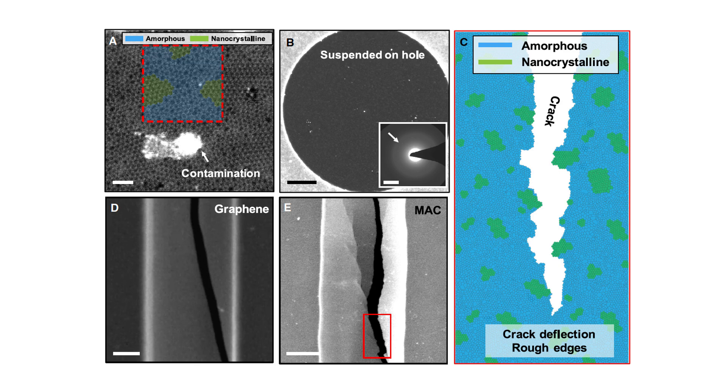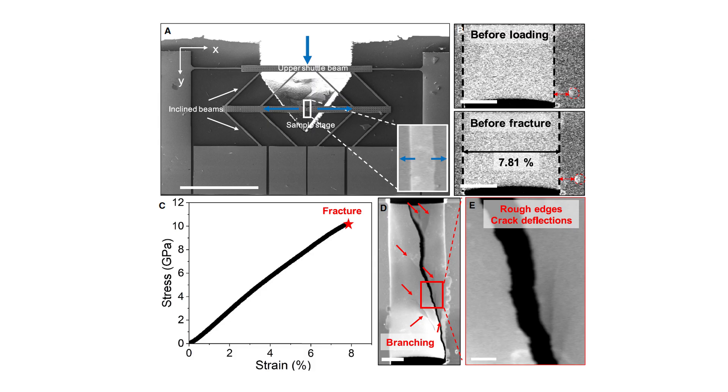Graphene is famous for being super strong, but it can be quite brittle. Once a crack starts growing in a pristine graphene sheet, it tends to tear cleanly in a straight line, with almost nothing slowing it down.